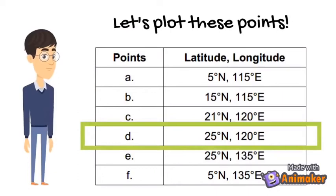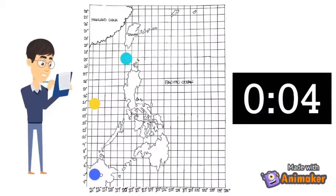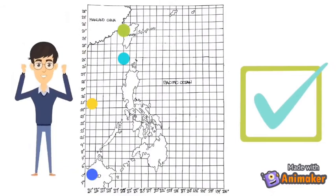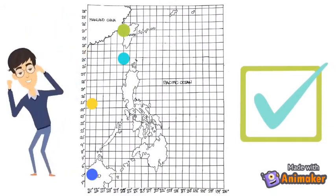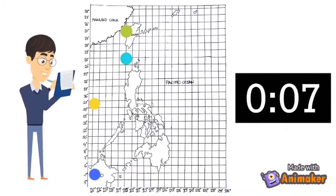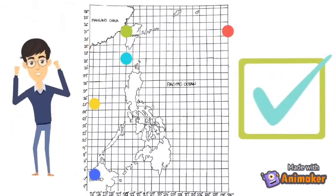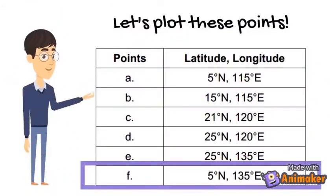Now to point C: 25 degrees north and 120 degrees east. Next is point E: 25 degrees north, 135 degrees east. For point F: 5 degrees north, 135 degrees east.